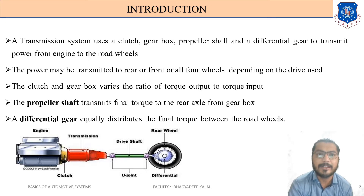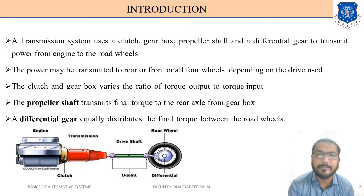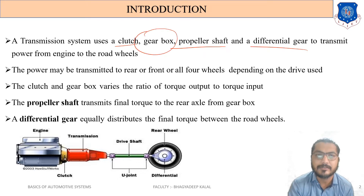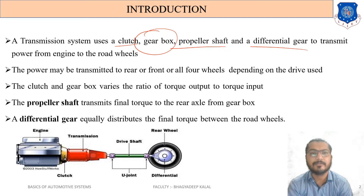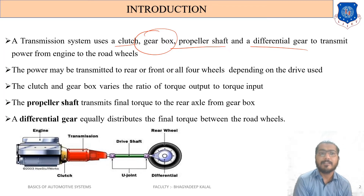The four main components of the transmission system are the clutch, gearbox, propeller shaft, and differential gear. In this chapter we discuss the gearbox only, as clutch, propeller shaft, and differential gear are separate chapters. The gearbox is divided into two categories: manual type and automatic or semi-automatic type.